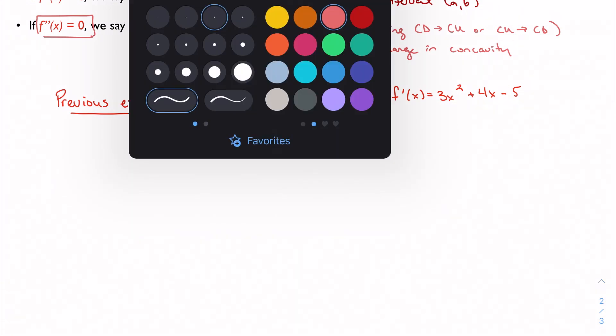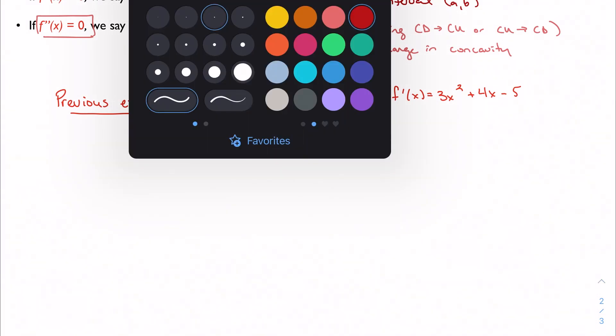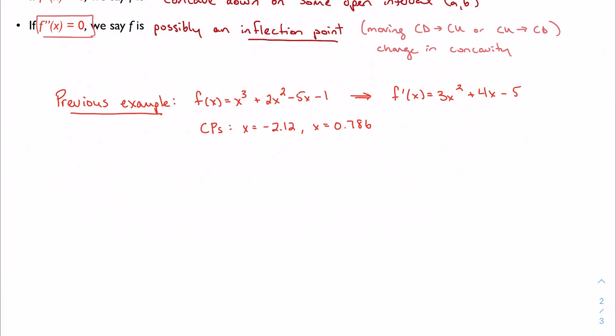So let's assume that I told you that you needed to use the second derivative test. Use the second derivative test to determine if these critical points are maxima or minima. Well, in order to do that, I need to know what the second derivative is. So we'll just take the second derivative. I'm going to get 6x plus 4. Fantastic.